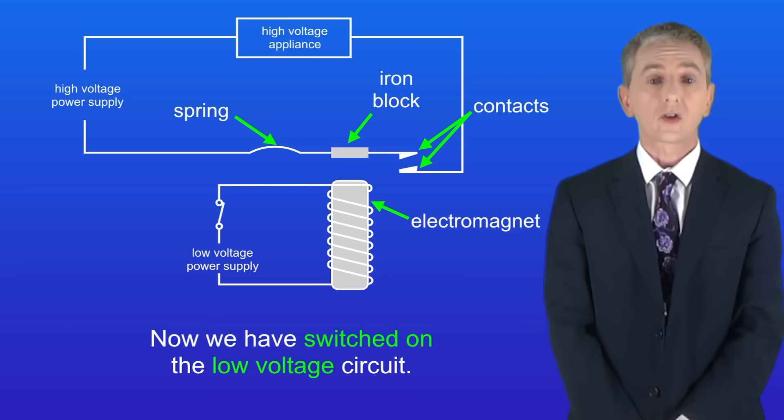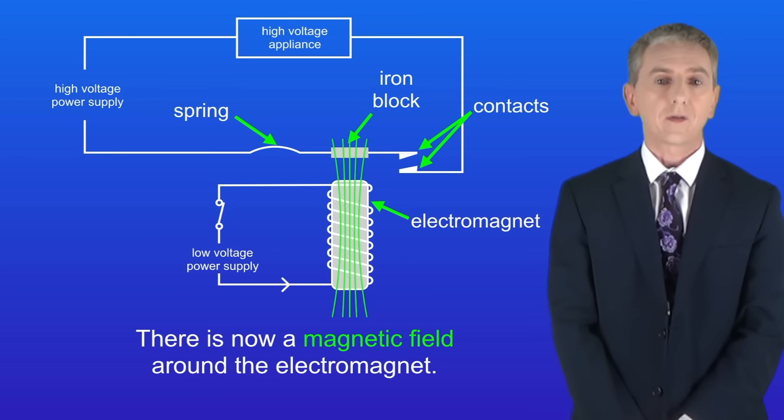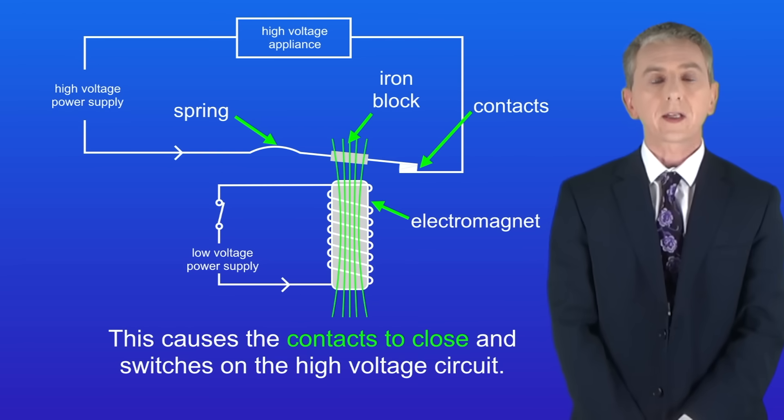Now we've switched on the low voltage circuit. A current now flows around the circuit, and this means that there's now a magnetic field around the electromagnet. The magnetic field now attracts the iron block in the high voltage circuit, and this causes the contacts to close and switches on the high voltage circuit.